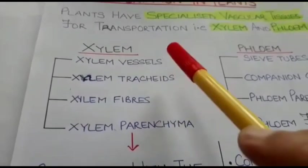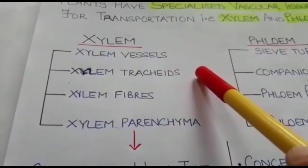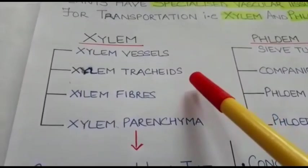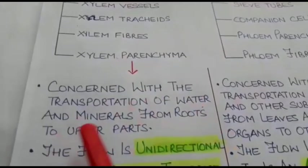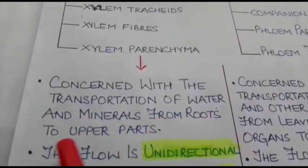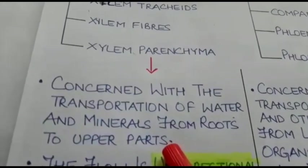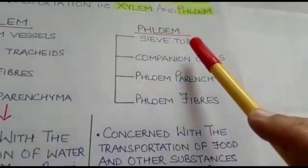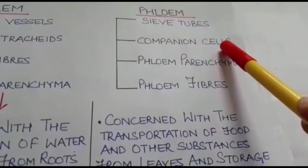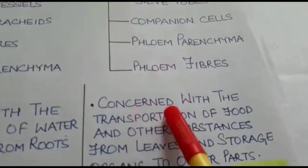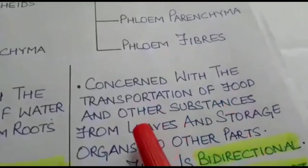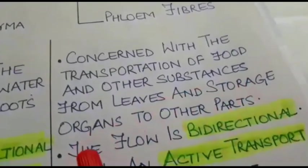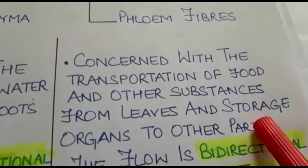When we talk about xylem, xylem vessels and xylem tracheids are mainly concerned with the transportation of water and minerals from roots to the upper parts of the plant body. Whereas in the case of phloem, specifically sieve tubes and companion cells are concerned with the transportation of food and other substances from leaves and storage organs to other parts of the plant body.